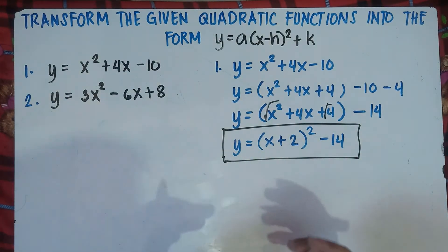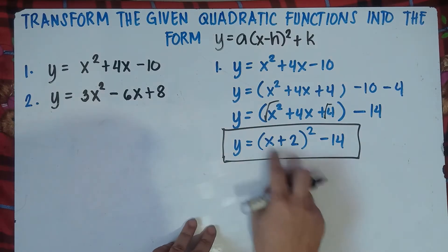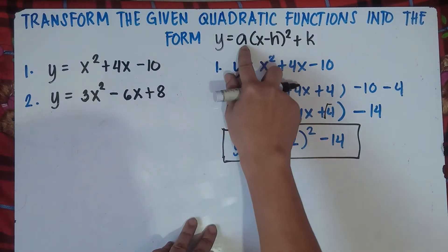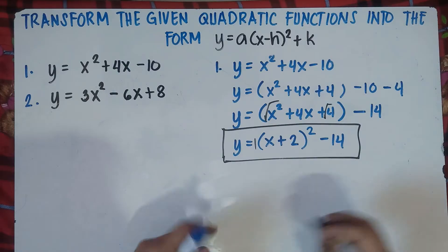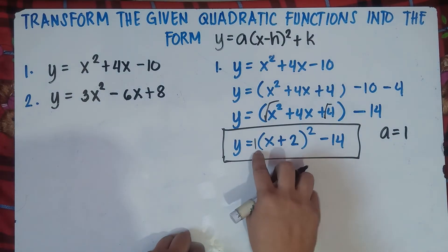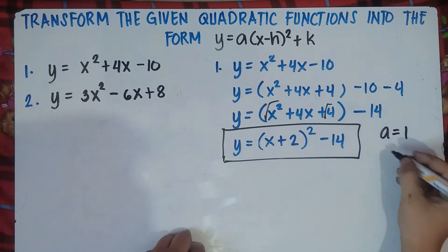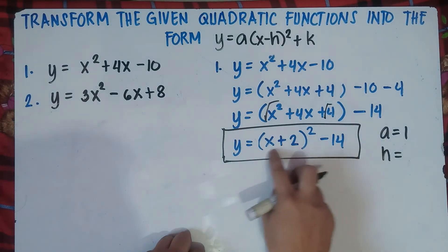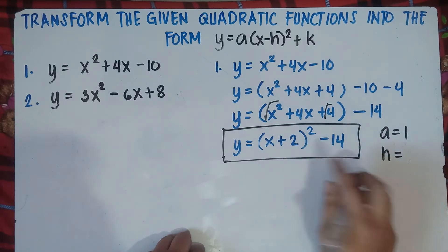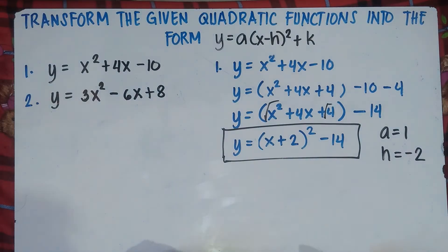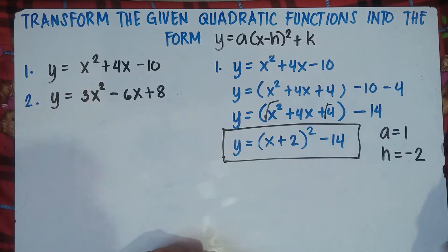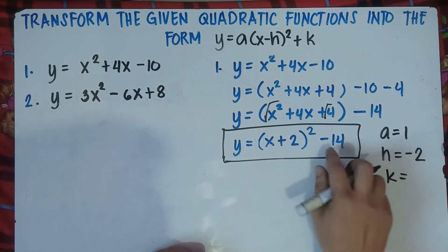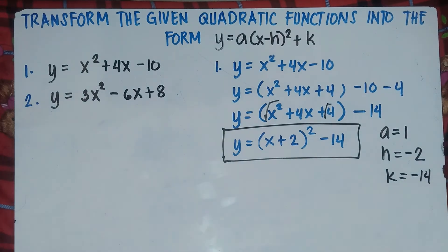That's the answer for number 1. If the teacher asks you to find the values of A, H, and K: your A is beside the parenthesis — if you don't see any number there, understood that there's a 1, so A is 1. Your H is inside the parenthesis — if this is positive 2, you get the additive inverse, so H is negative 2. And your K is the last number, negative 14.